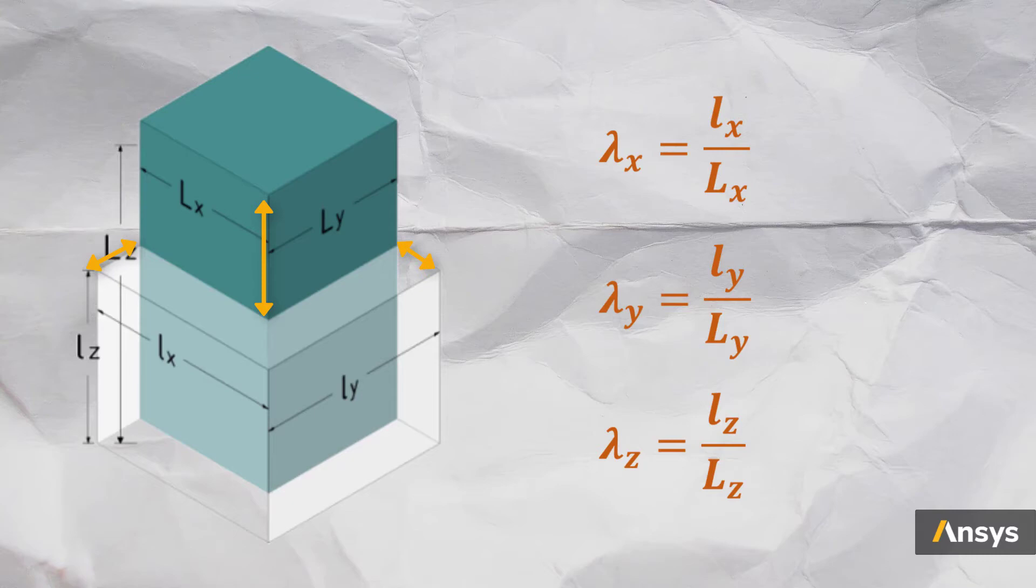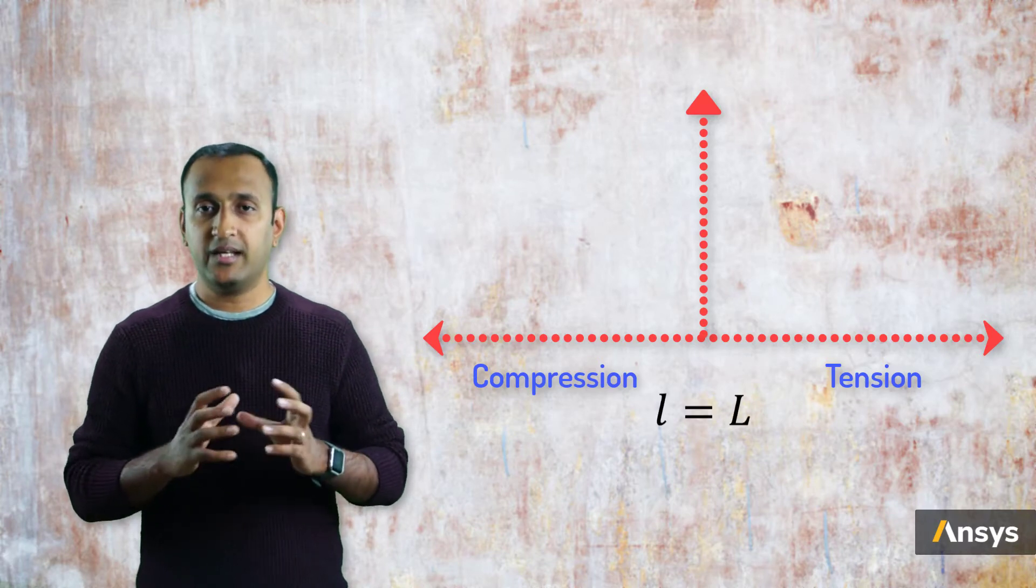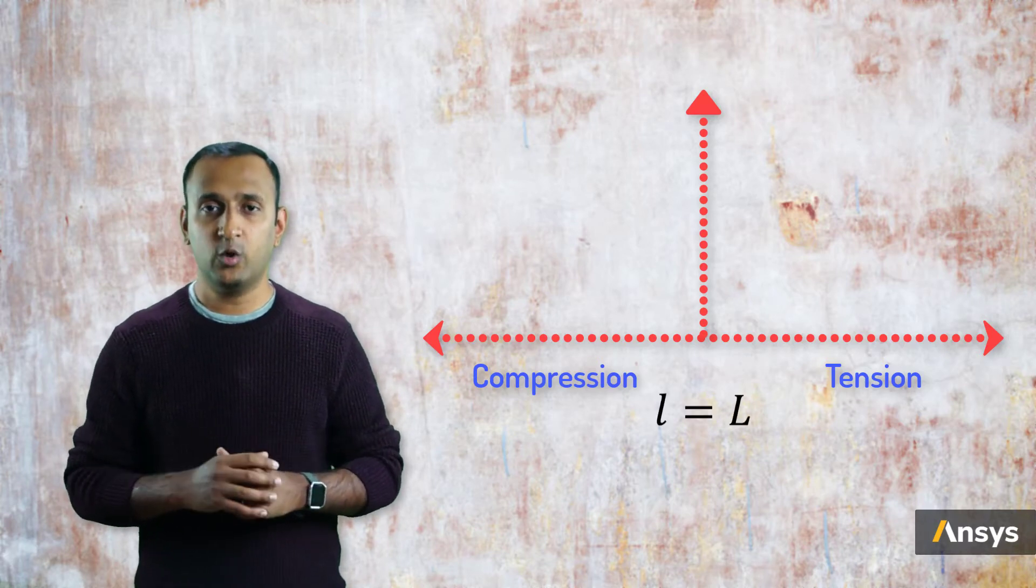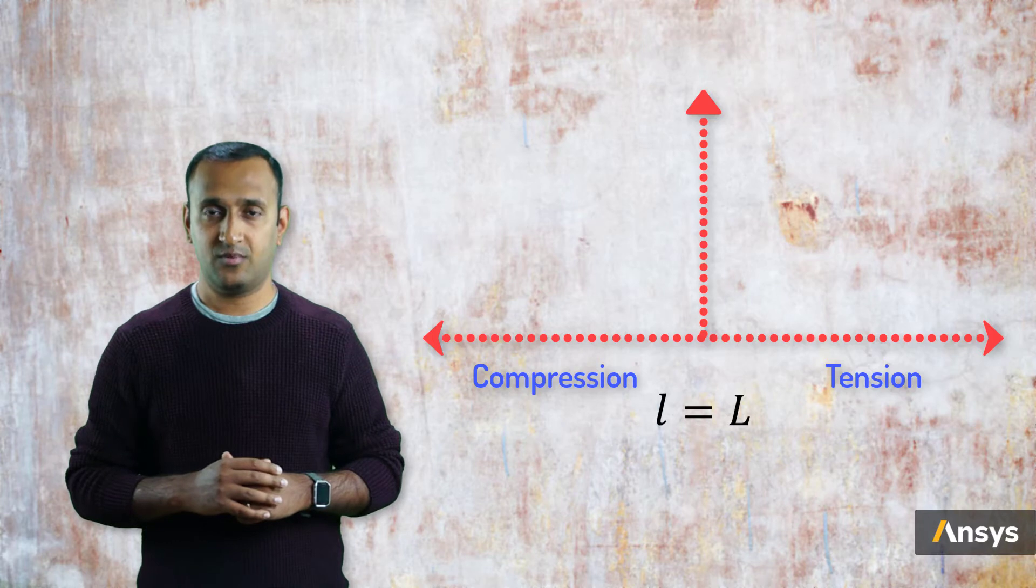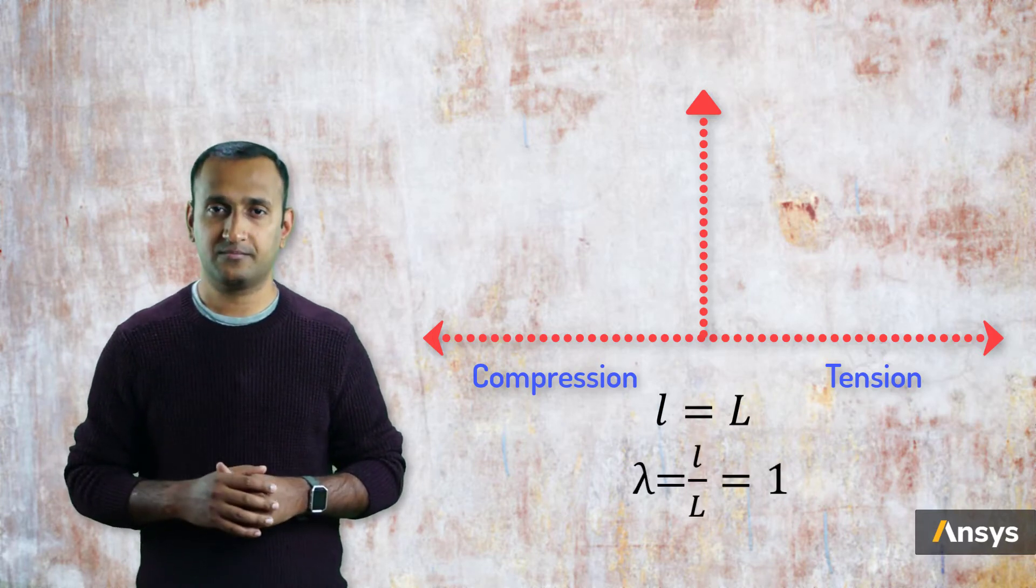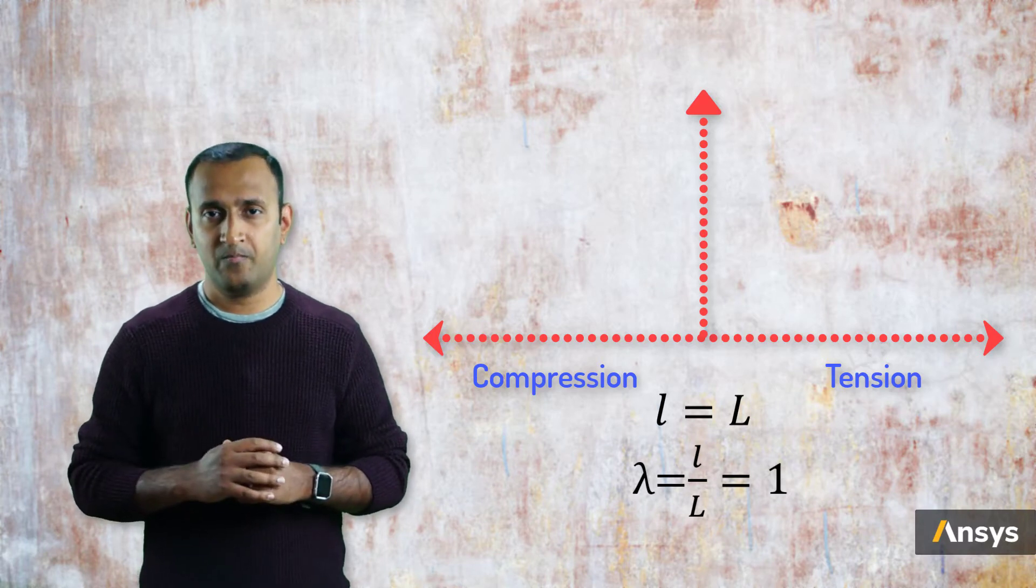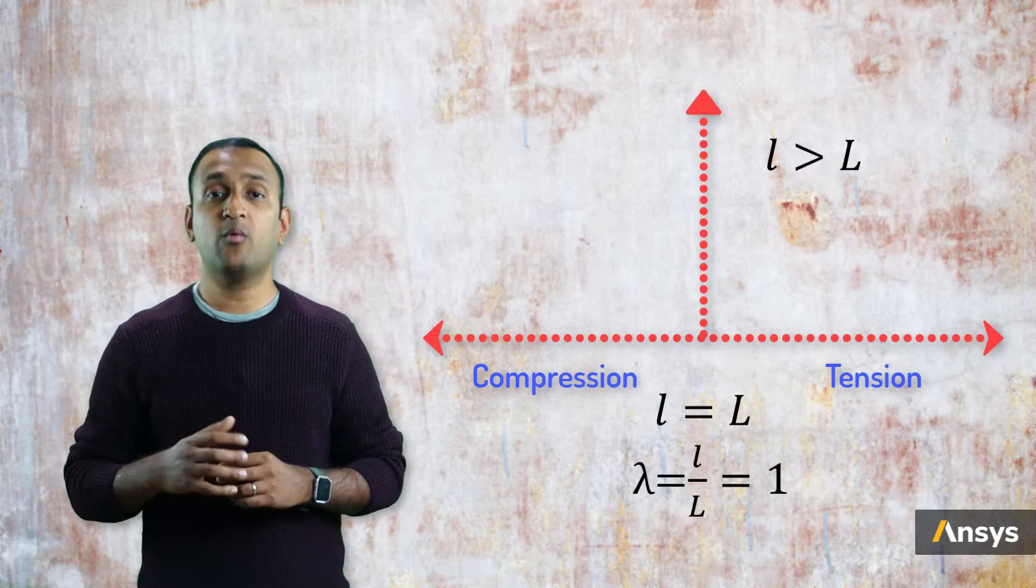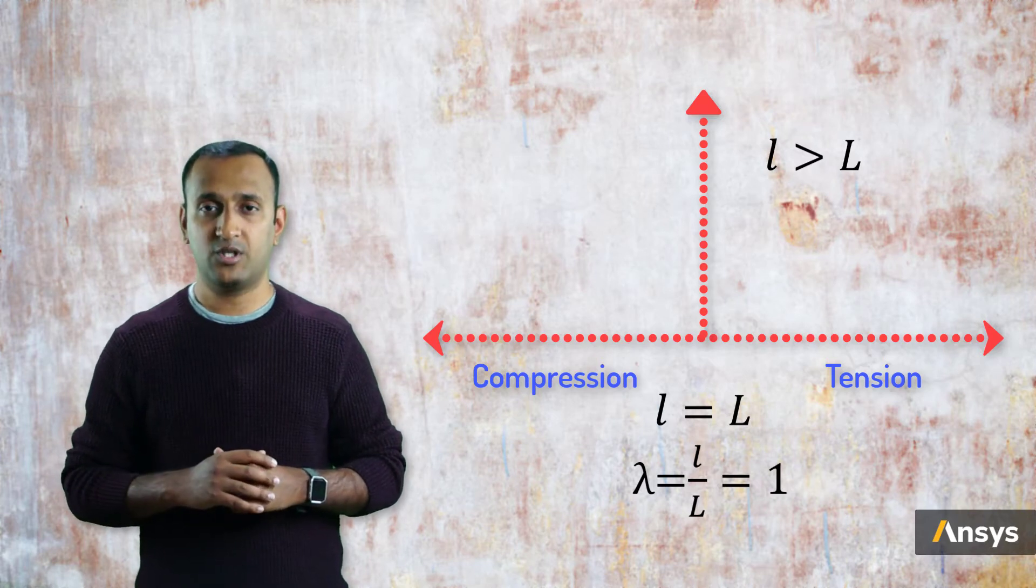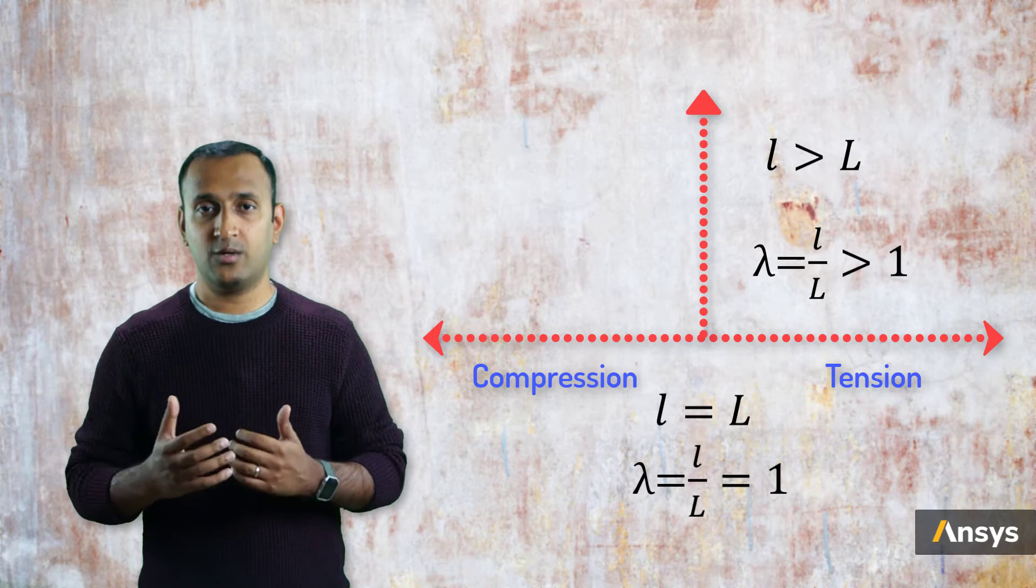Physically, they tell us to what extent and in what direction did the material change its dimensions during deformation. For instance, at zero deformation state, both the initial and final lengths of the cube are the same, so the stretch ratios are equal to one. If the part is elongated in one direction, its final length is going to be more than the initial length, so a stretch ratio that is more than one tells you that it is tension.